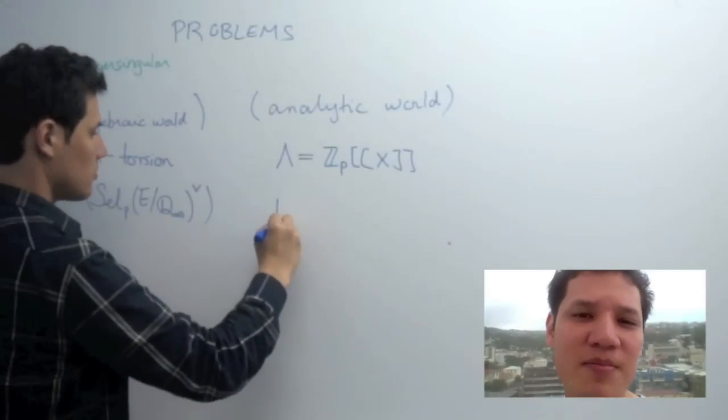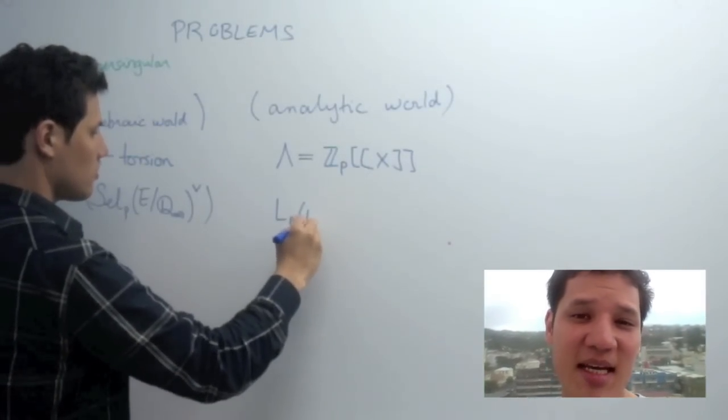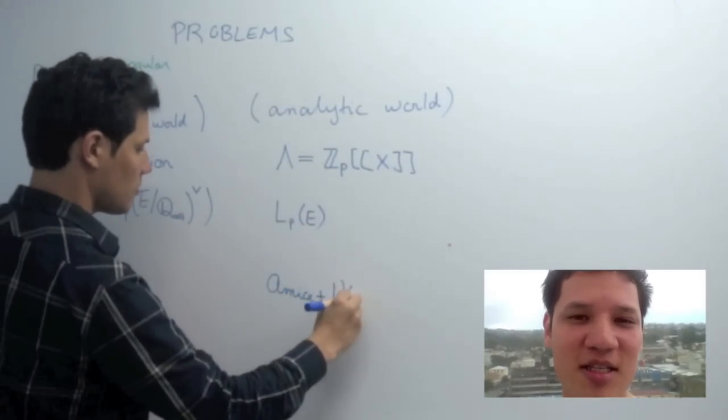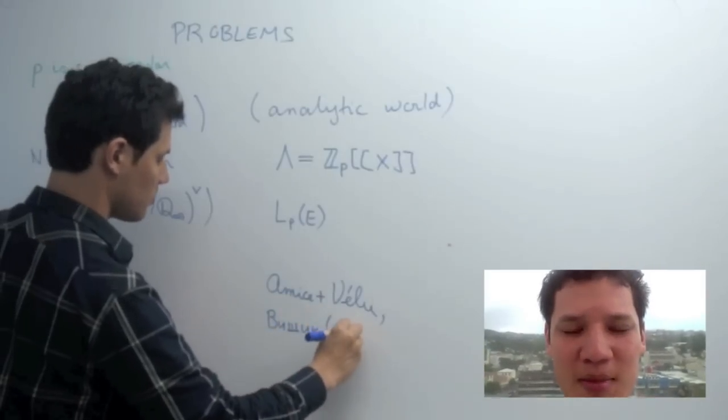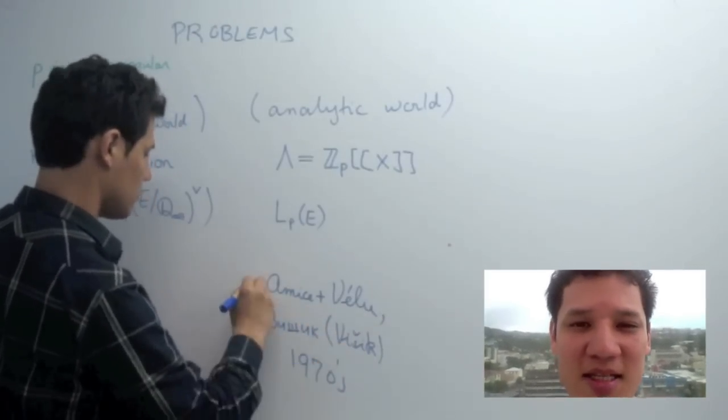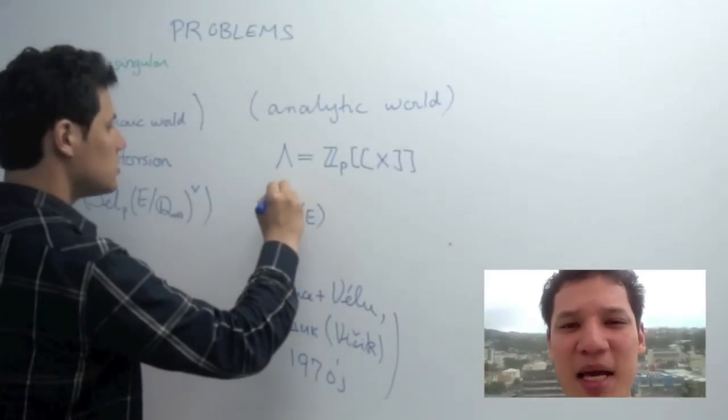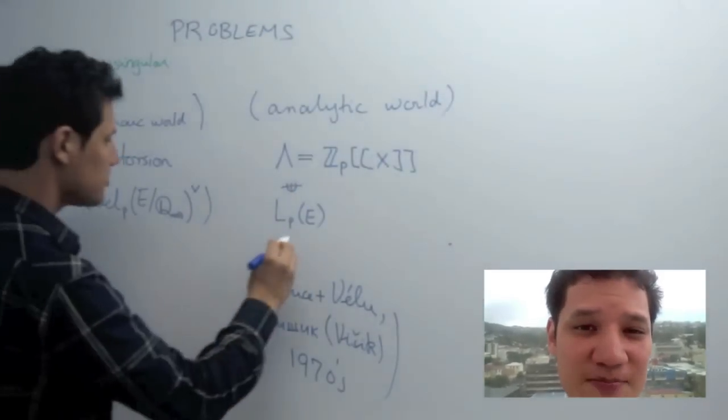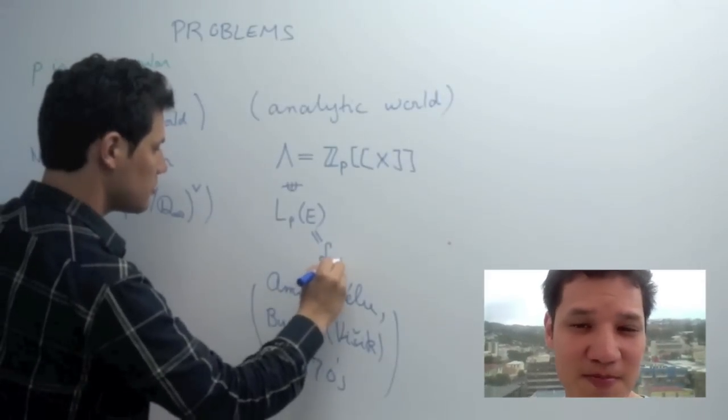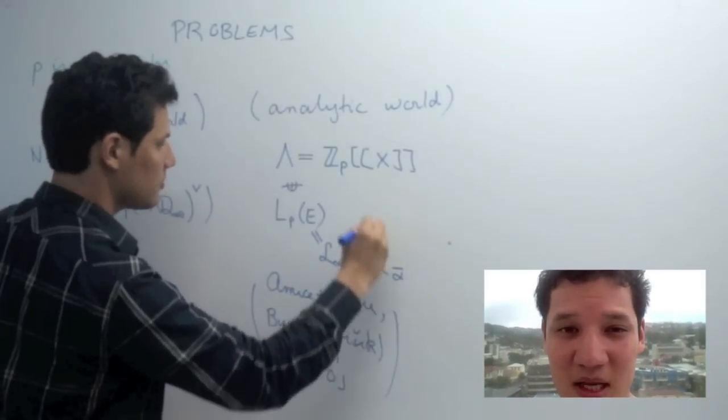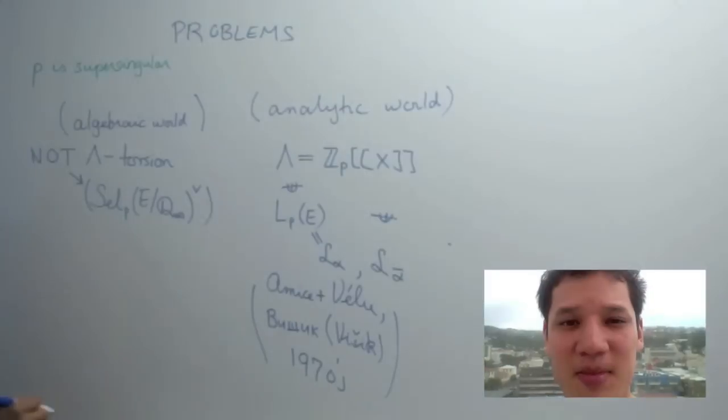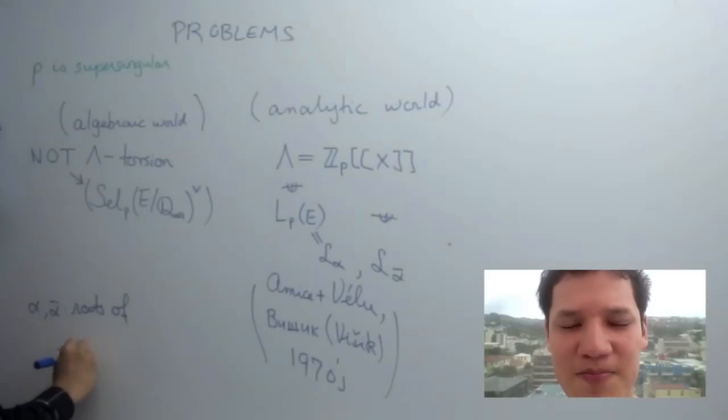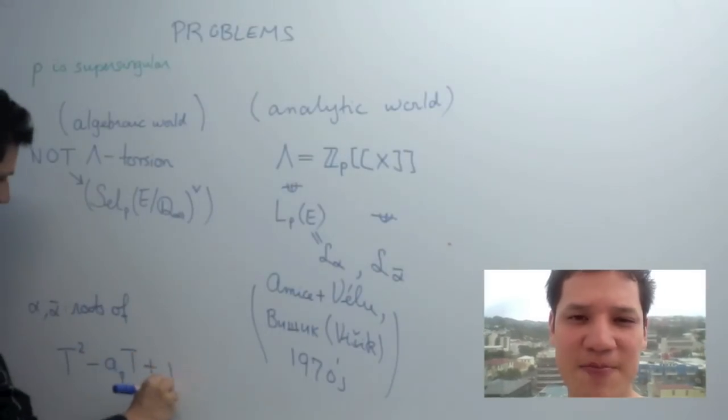The corresponding problem on the analytic side is that while there is a p-adic L function, Lp, it was constructed by Amice and Velu and independently by Vishik in the 1970s, this p-adic L function is not an element of lambda. In fact, there are two p-adic L functions, L alpha and L alpha bar, neither of which is in lambda. Here alpha and alpha bar are the roots of the Hecke polynomial t squared minus ap t plus p.